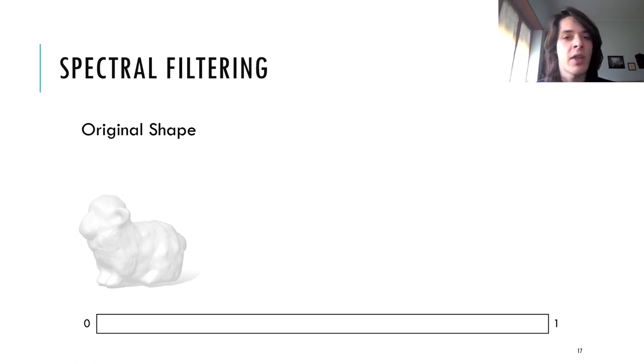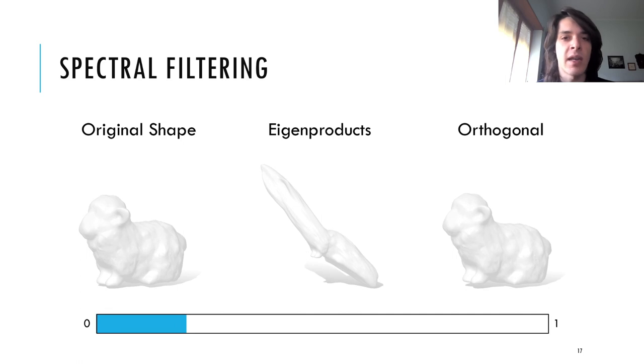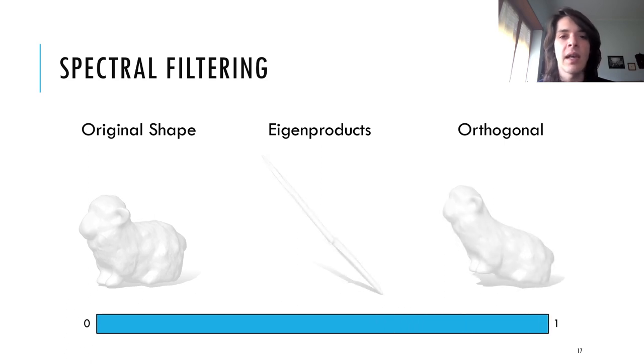Here we show an example where we try to reconstruct a shape using the naive eigenproducts and the orthogonalized eigenproducts, but we inject more and more noise in the spectral domain. Look how eigenproducts, as we add more noise, approach a more meaningless solution, while the orthogonal basis is able to preserve the overall shape even if it is a bit distorted.